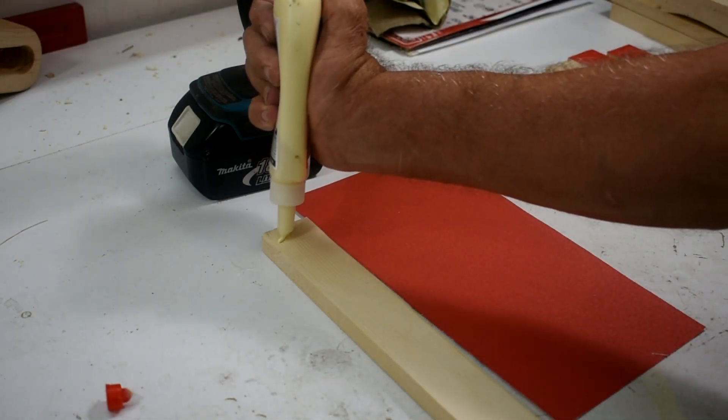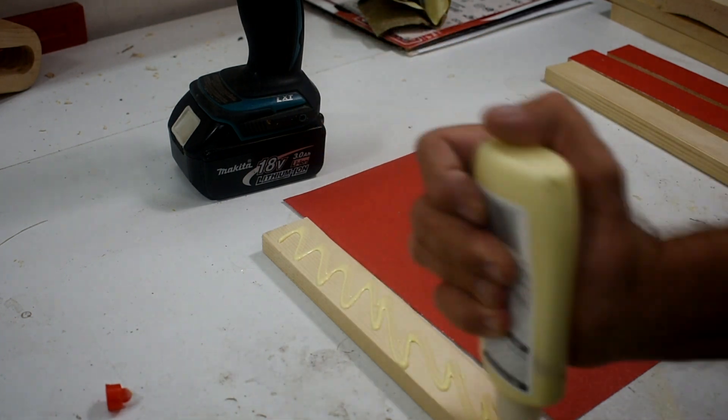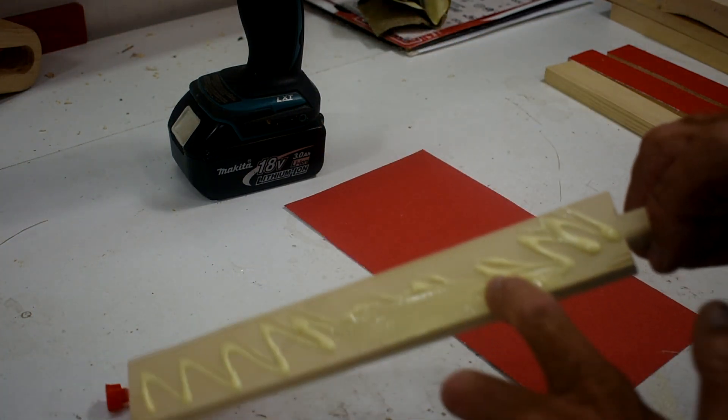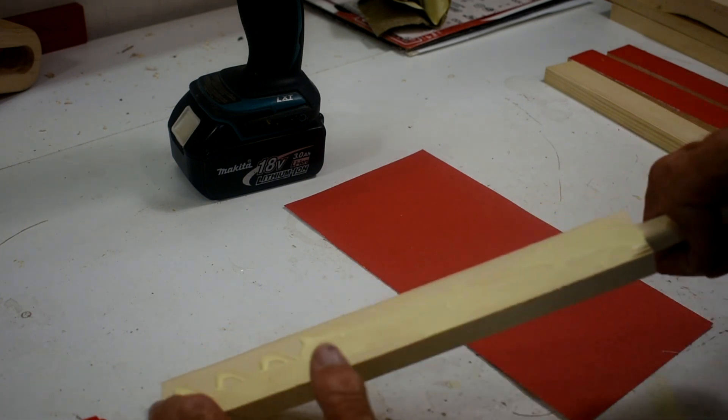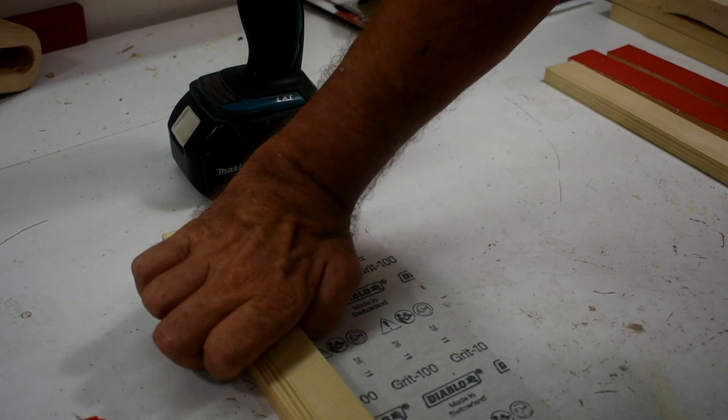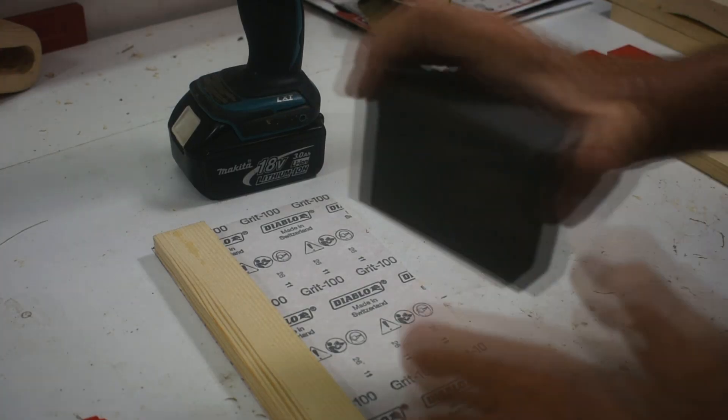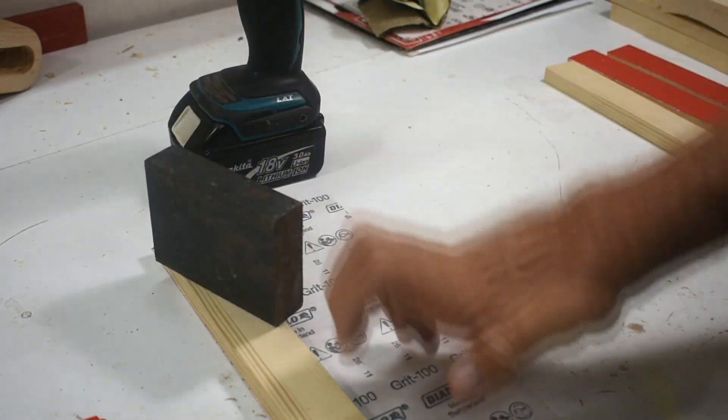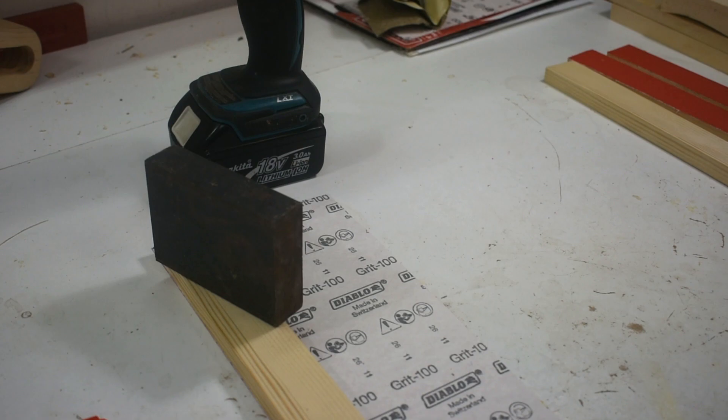Now it's time to glue the sandpaper onto the wood. I'll glue a piece of sandpaper on each side of the block and just let it sit for a while.